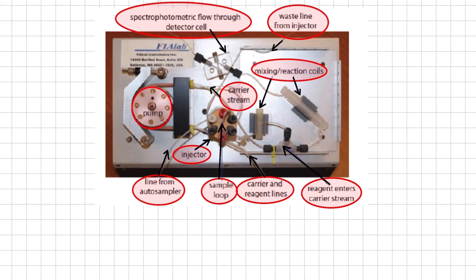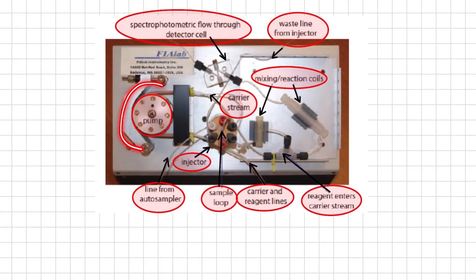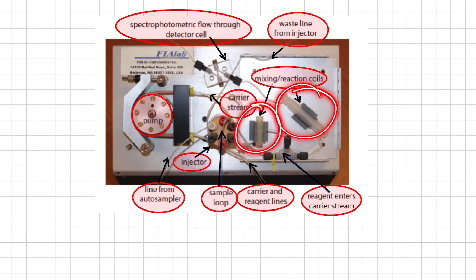We can also incorporate separation modules into the transport system. This particular configuration has two channels — one for the carrier stream and one for the reagent line. The final flow, including the sample, reagent line, and carrier line, reacts in the two coils and moves toward the detector, where we obtain the signal in the form of a FIAgram. The detailed discussion about the working principle of the pump, carrier stream, injectors, and reaction and mixing coils will be covered in the next lecture.